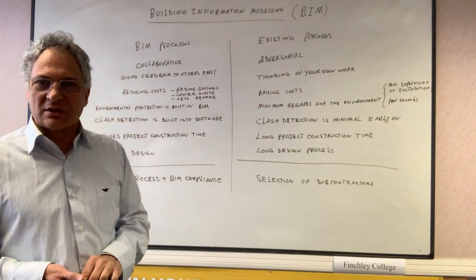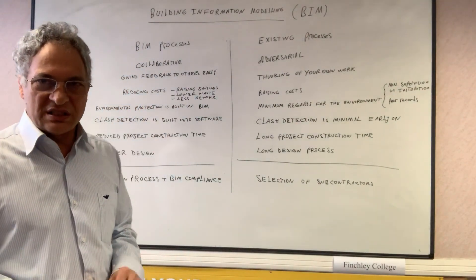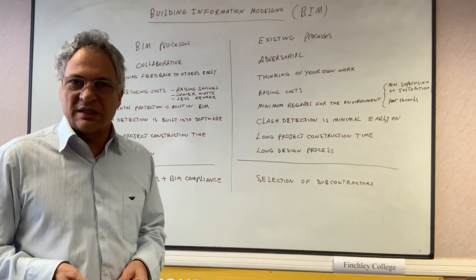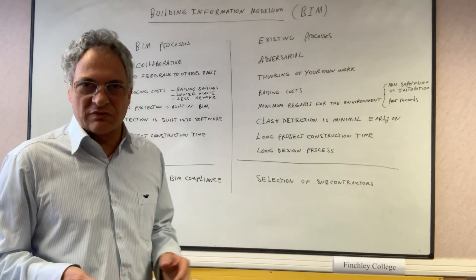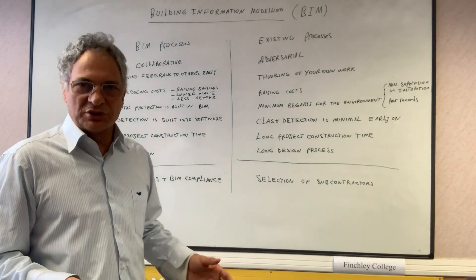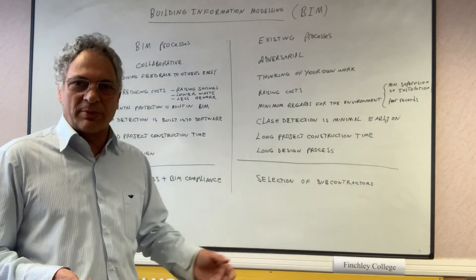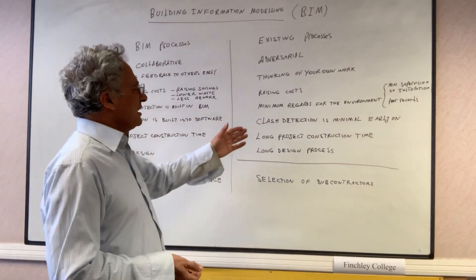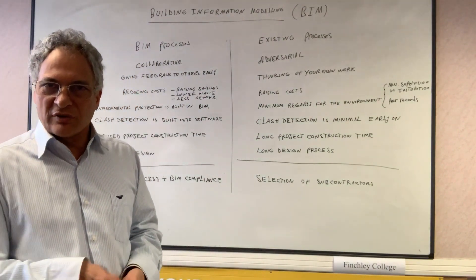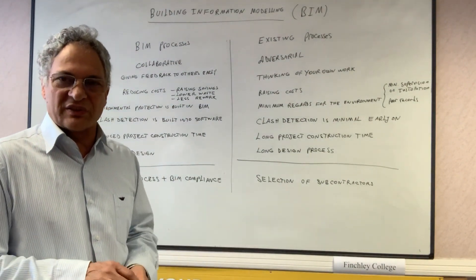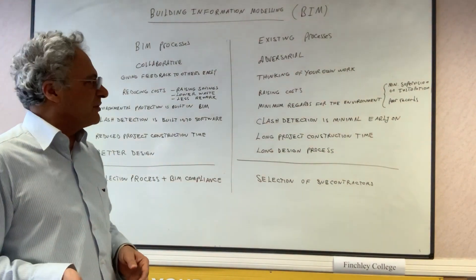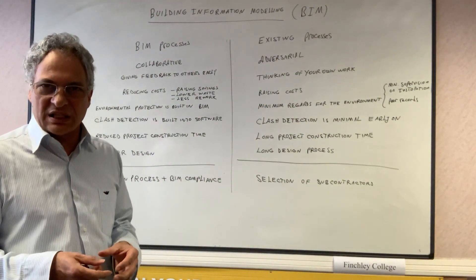One of the major problems that raises cost and time on a project is clash detection. For example, an MEP subcontractor designs their pipework, and when it comes to construction, we discover the pipe is going through a beam that nobody knew about. The job has to stop and either the beam or the pipework must be redesigned. The clash doesn't have to be a physical clash — sometimes there's no room left for installation because something else is too close. BIM software detects and highlights both physical clashes and close-proximity conflicts.